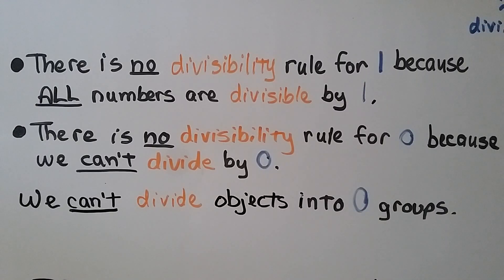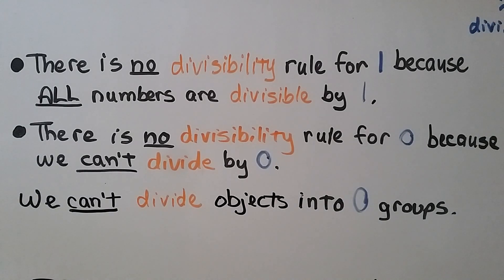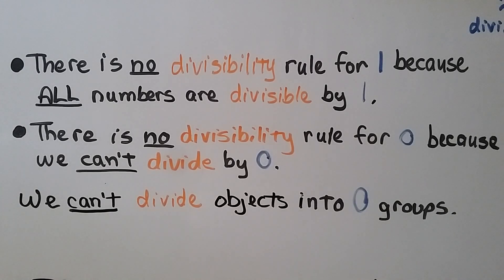There's no divisibility rule for 1 because all numbers are divisible by 1. And there's no divisibility rule for 0 because we can't divide by 0 — we can't divide objects into 0 groups.